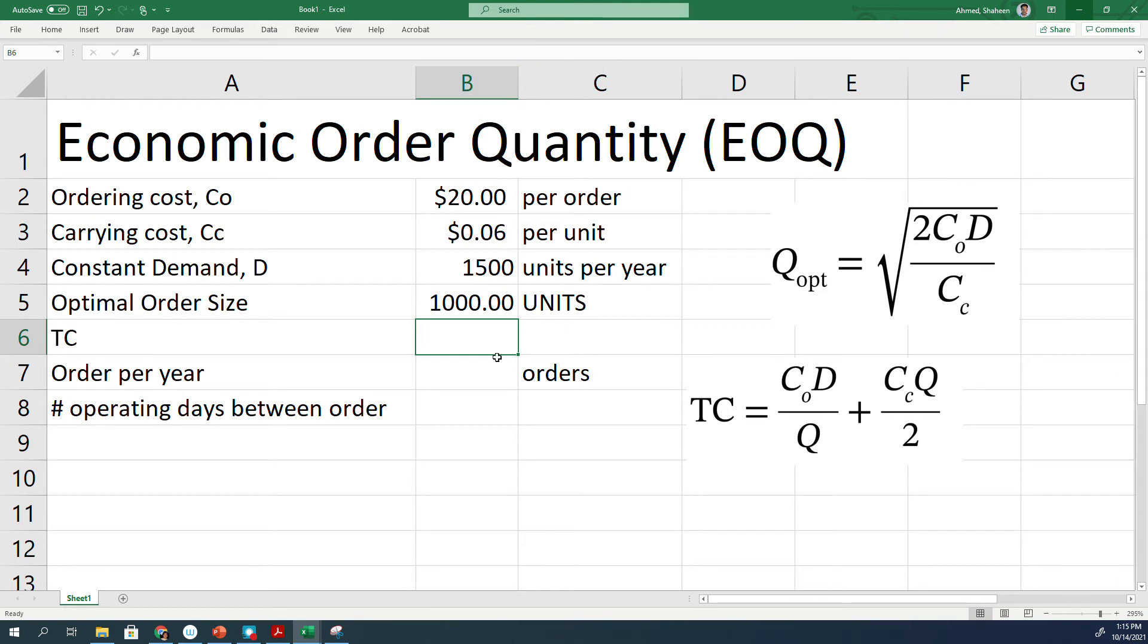And the total cost is using the second equation, which is C0 times the demand per year divided by the order size plus the carrying cost times Q order size divided by two. So that's the total inventory cost for this particular situation.